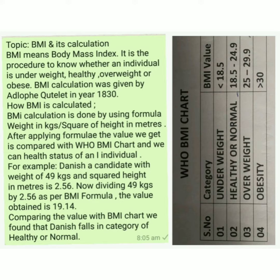اگر ہم اب اس WHO BMI chart سے compare کرتے ہیں تو Danish جو fall ہوتا ہے وہ second category یعنی healthy اور normal میں fall ہوتا ہے، کیونکہ اس category کی range 18.5 to 24.9 ہے اور Danish کا value 19.14 ہے — جو اس range میں آتا ہے۔